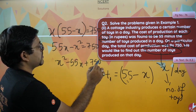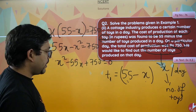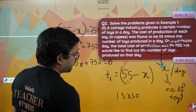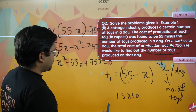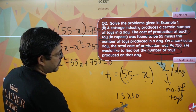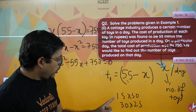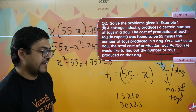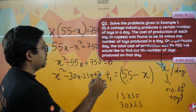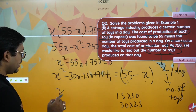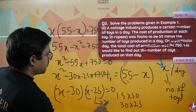The equation becomes x into 55 minus x equals 750, which gives x squared minus 55x plus 750 equals 0. Now factorize: 30 into 25 equals 750, and 30 plus 25 equals 55. So: x squared minus 30x minus 25x plus 750 equals 0, which factorizes as x minus 30 into x minus 25 equals 0. So x equals 25 or x equals 30.